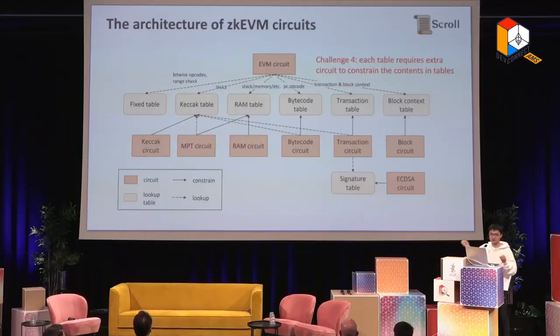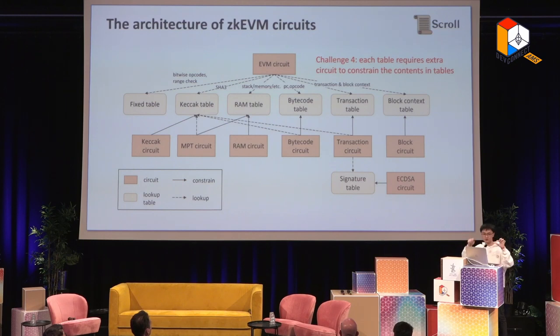Here is the key question: in the EVM circuit, you are always looking up something and assuming that something existing in a table is correct. But it may not be, because the table is also provided by you. That's why you need so many sub-circuits. There will be a Keccak circuit that constrains the Keccak hash function, and it needs to prove that all the inputs and outputs in the Keccak table have the correct corresponding relationship.